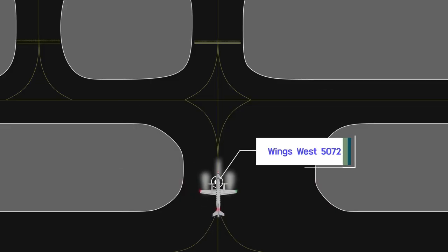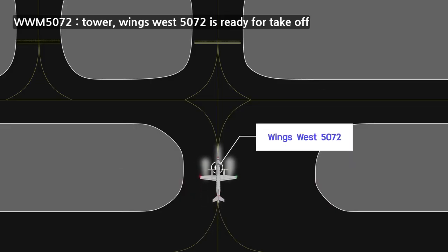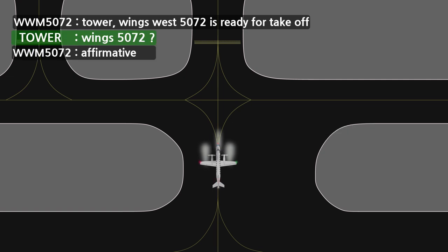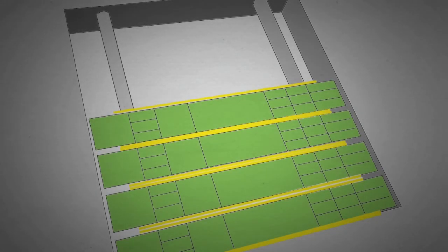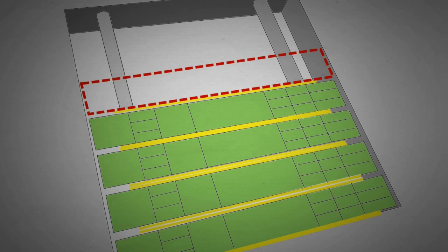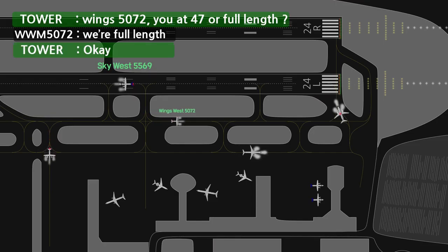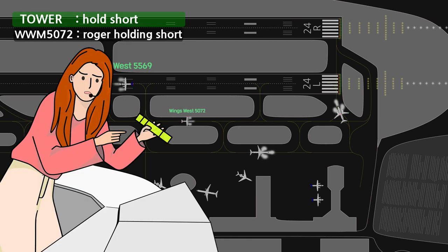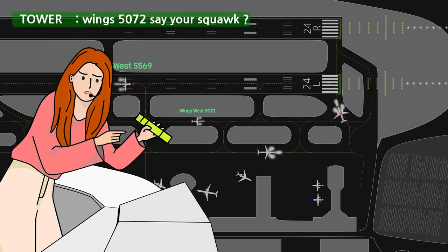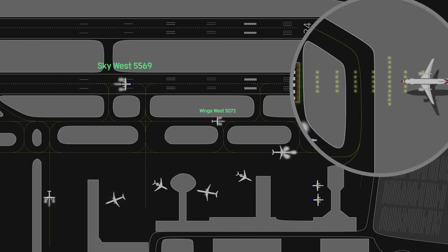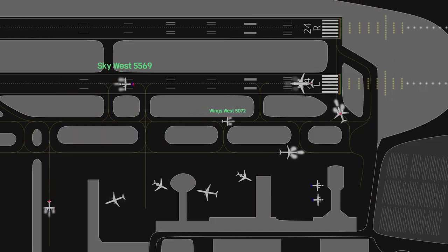Wings West 5072 on parallel taxiway called the controller and stated they were ready for takeoff. The controller, which did not have the Wings West 5072's flight progress strip, was eager to check the position of this aircraft and find the strip. This became a decisive factor for missing the last golden time when the runway scan was possible. Eventually, the nose gear of US Air 1493 touched down on the runway and immediately collided with Skywest 5569 on the runway.